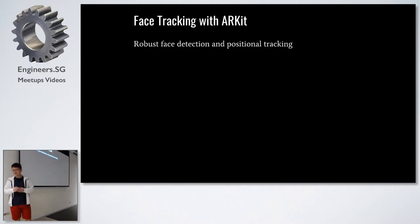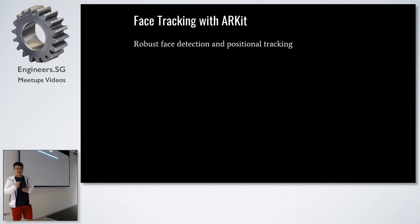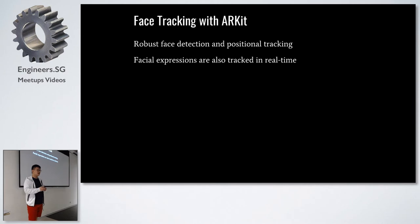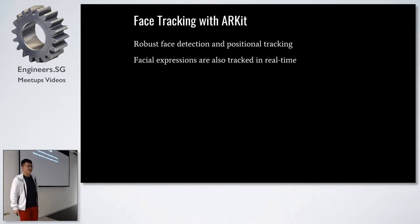The first capability is face twist detection and positional tracking, so you know the face's positional information. Most importantly, with ARKit we are able to get information on around 50 muscle movements, and with that information we can do a lot of fancy stuff — all in real time, which comes in handy.